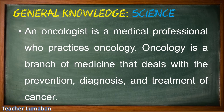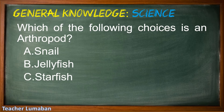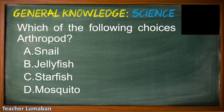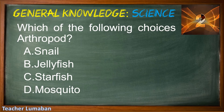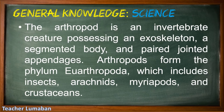Which of the following choices is an arthropod? Letter A, snail; Letter B, jellyfish; Letter C, starfish; Letter D, mosquito. Please choose the suitable answer in 5 seconds. 5, 4, 3, 2, 1. The correct answer is Letter D, mosquito. An arthropod is an invertebrate creature possessing an exoskeleton, a segmented body, and paired jointed appendages. Arthropods form the phylum Arthropoda, which includes insects, arachnids, myriapods, and crustaceans.